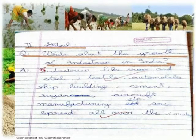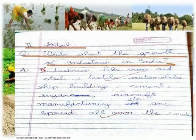Question 1: Write about the growth of industry in India. Industries like iron and steel, textile, automobile, shipbuilding, cement, sugar, aircraft manufacture, etc. are spread all over the country.